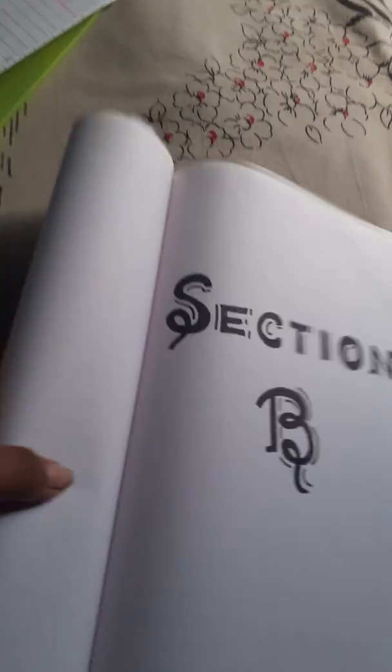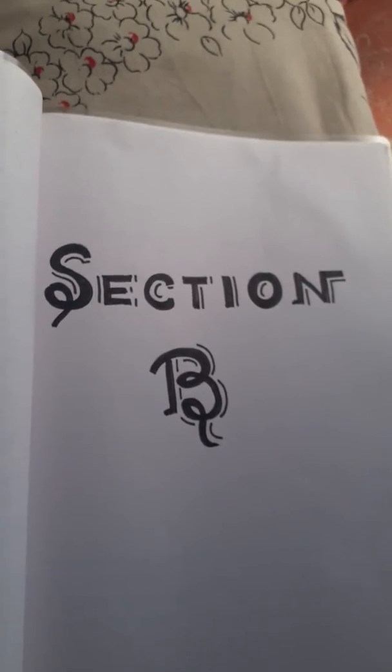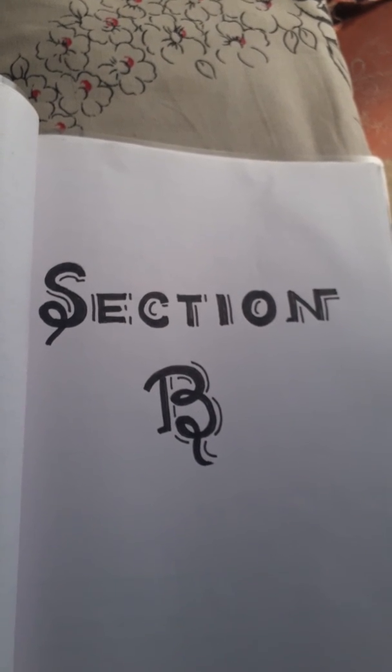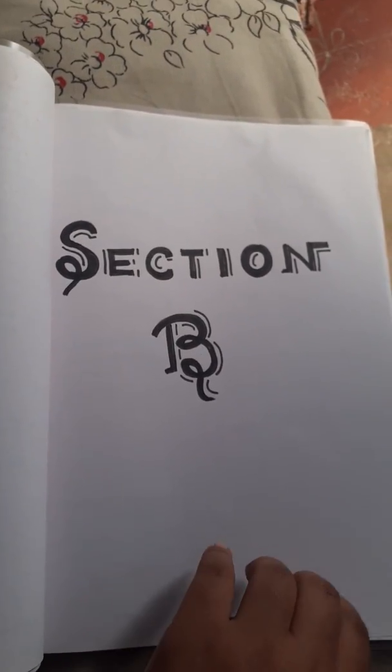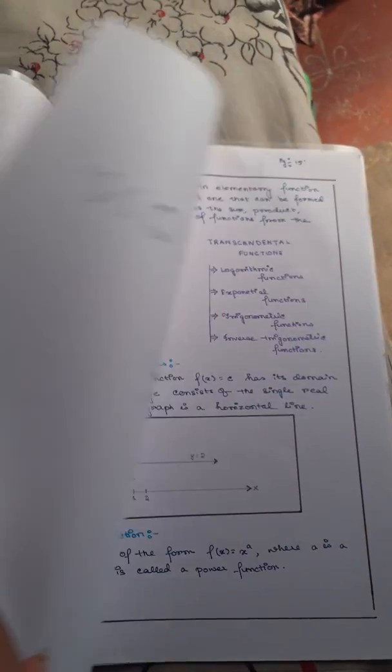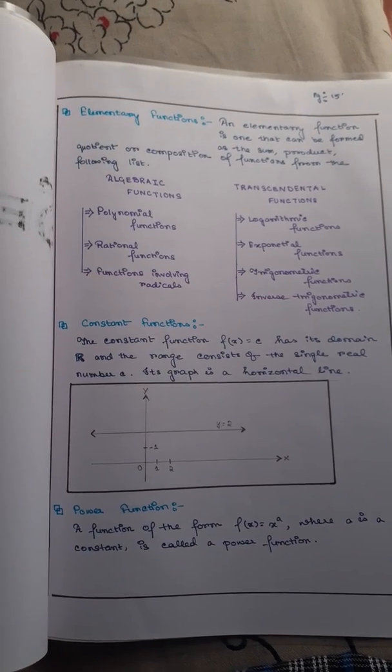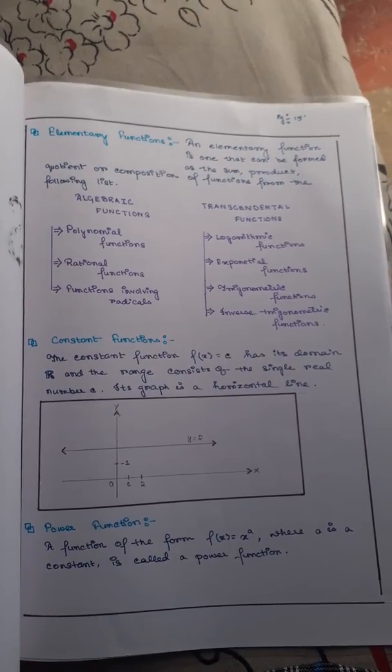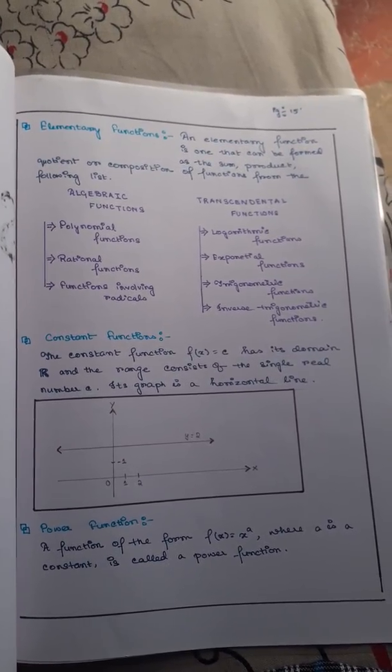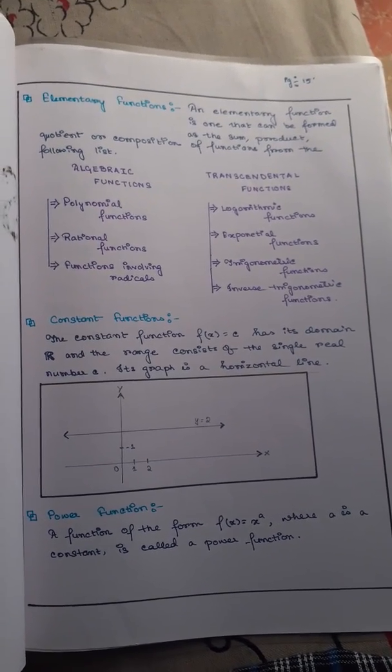Now comes section B, and in my section B portion I have curve tracing by trigonometric functions. So let's see what I have done in section B. The first thing which I have done is elementary functions, definition of it, and then I have made a chart of algebraic functions and transcendental functions. Then I have described the constant function and power function.